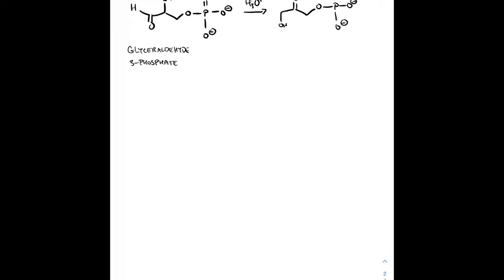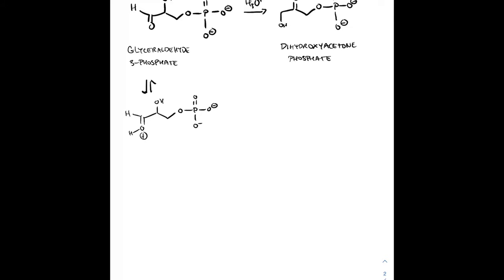Here's a biological example. Glyceraldehyde-3-phosphate can undergo keto-enol tautomerization to form dihydroxyacetone phosphate. This transformation is important because dihydroxyacetone phosphate is a key intermediate in a variety of metabolic pathways for both plants and animals — including a process in plants that occurs in the absence of light. This illustrates how much biochemistry relies on carbonyl chemistry.